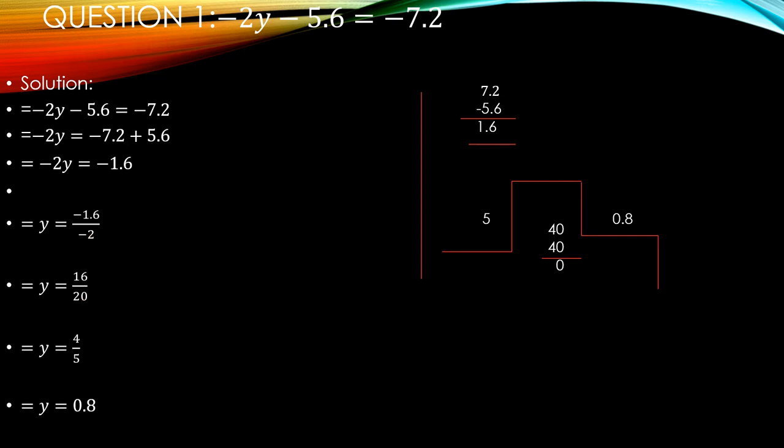Now minus 1.6 upon minus 2. Minus minus cancel out, and it is 1.6 upon 2. Now we are removing the decimal from the numerator. When we remove the decimal point, we get 0 in the denominator. Denominator become 20 and numerator become 16. Now 16 upon 20 cancel out with 4: 4, 4 the 16, 4, 5 the 20. Now it is 4 upon 5.